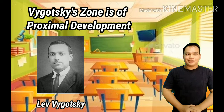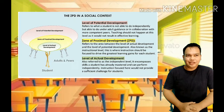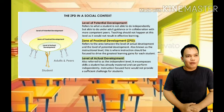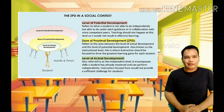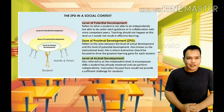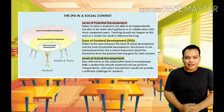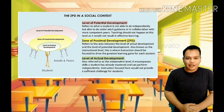Vygotsky's Zone of Proximal Development. Vygotsky believed that when a student is in the zone of proximal development for a particular task, providing appropriate assistance will give the student enough of a boost to achieve the task. The zone of proximal development is a range of abilities that an individual can perform with assistance but cannot yet perform independently. These skills are called proximal because the individual is close to mastering them but needs more guidance and practice to perform them independently.